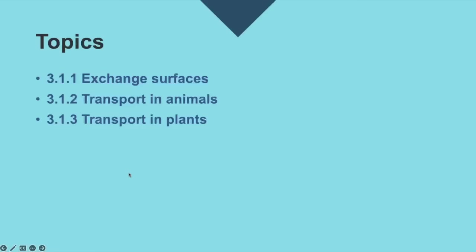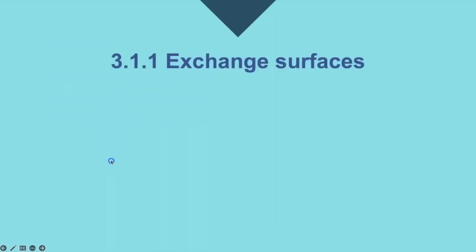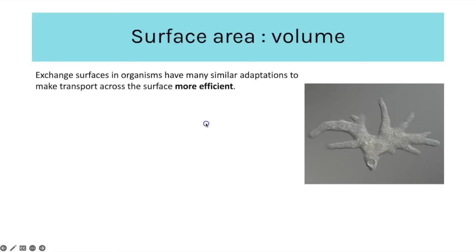Here are the three key sections that this topic is split into and we're going to begin with the exchange surfaces. This starts with knowing about the importance of surface area to volume ratio. Exchange surfaces in organisms have many similar adaptations to make sure that substances such as oxygen and carbon dioxide can exchange across the surfaces as efficiently as possible.